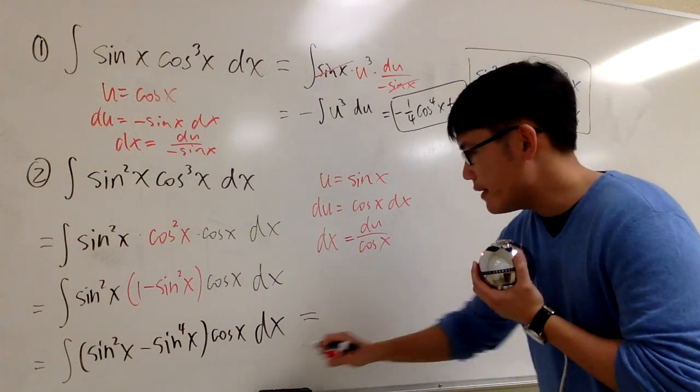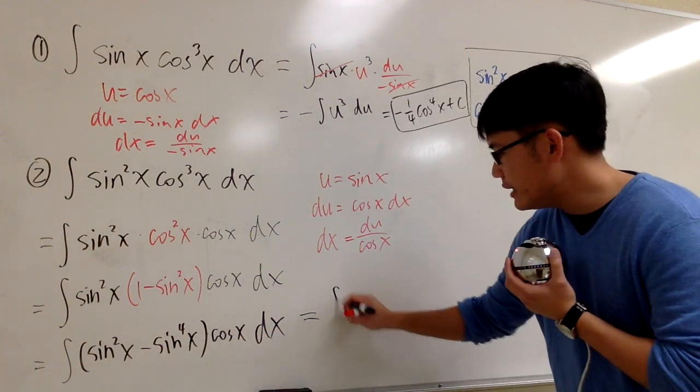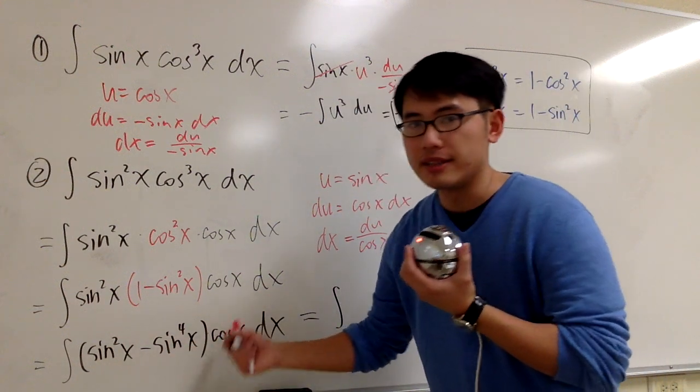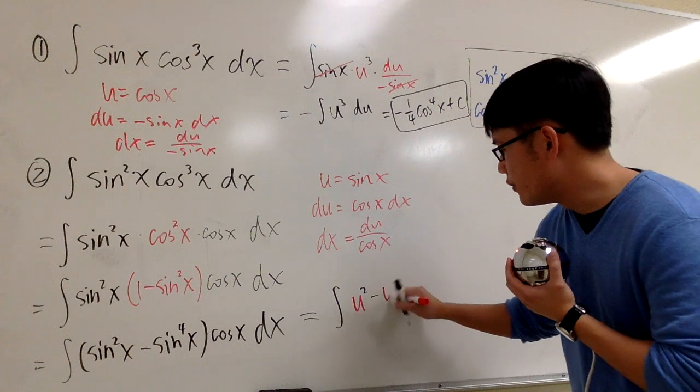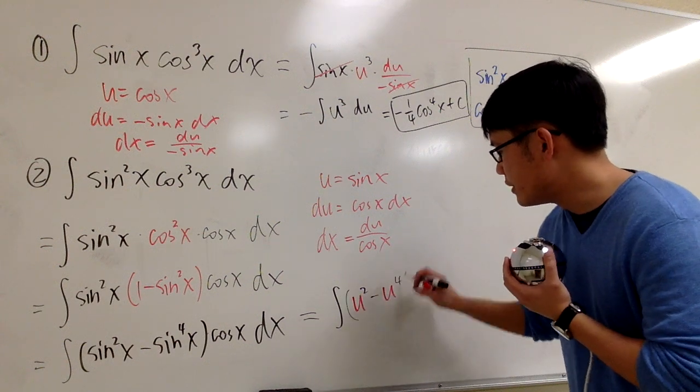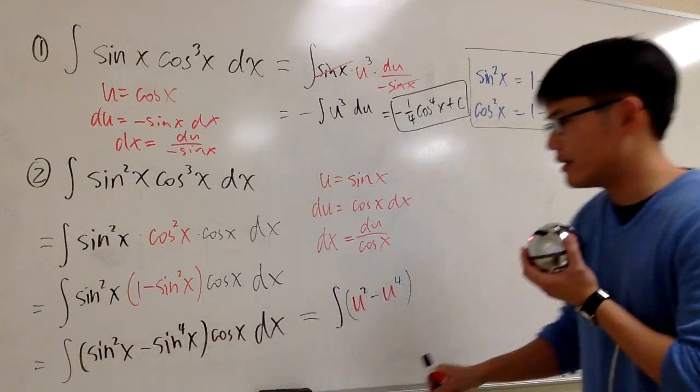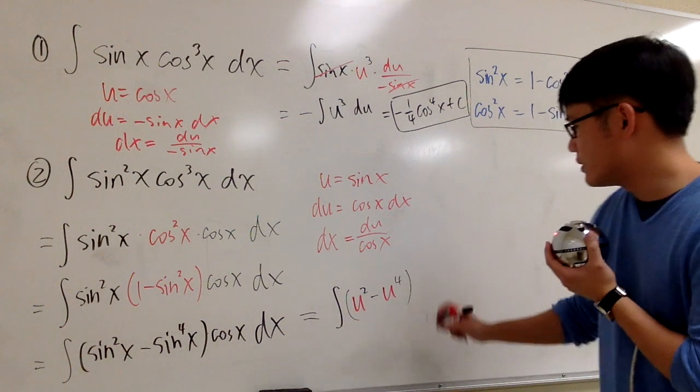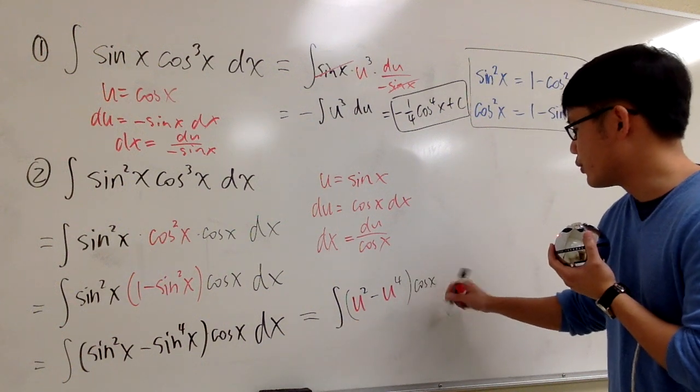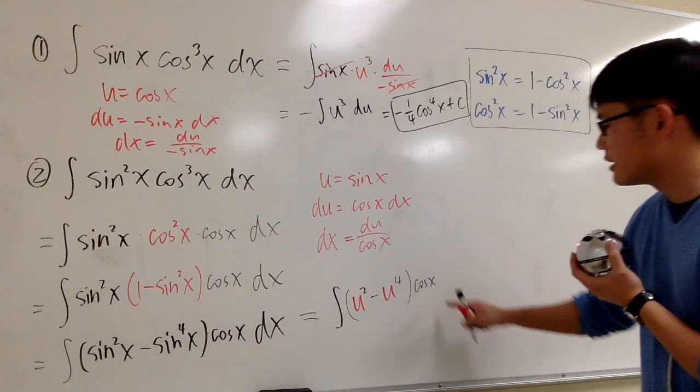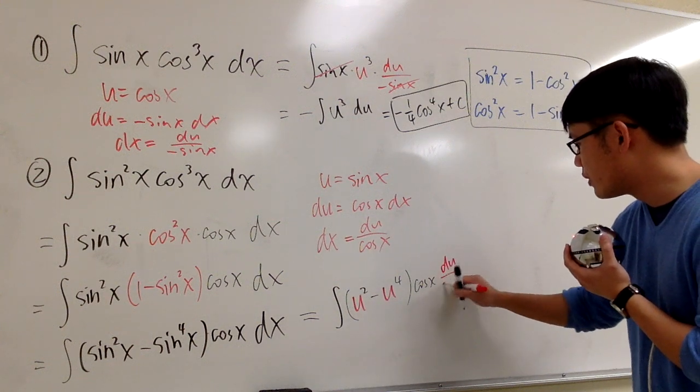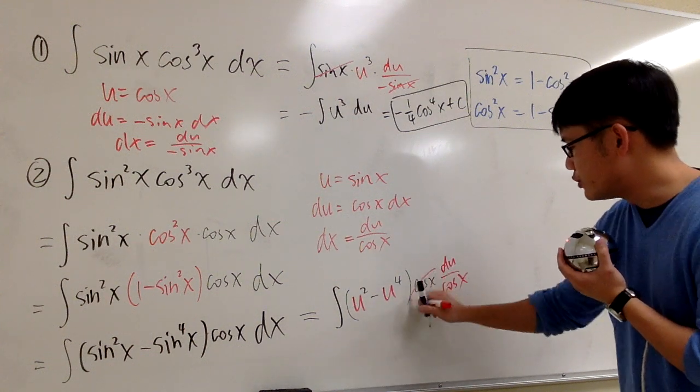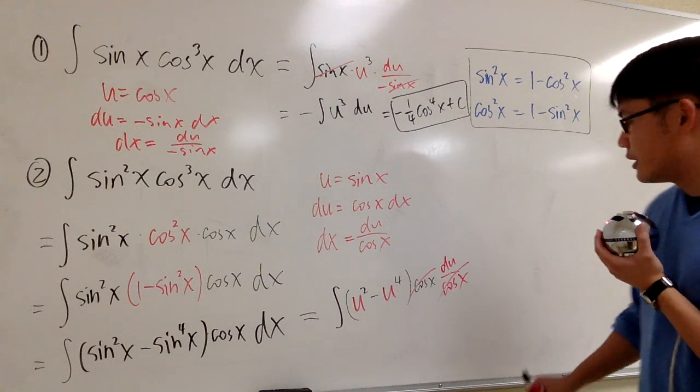So this one, this integral right here, is just integral of the sine becomes the u. So we have u squared minus u to the fourth power in the parentheses. Right? That's the first one. And then cosine dx will, depends on how you like to do it, I like to just write down the cosine x. And then the dx is du over cosine, so let me write down du over cosine x. I just like to show you guys the cancellations. So now what?